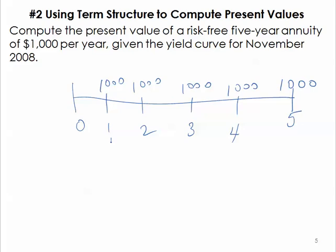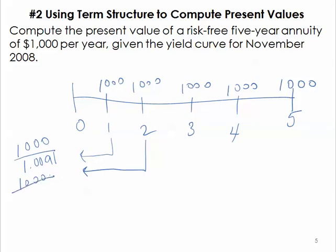So we'll discount the one thousand dollars back at the one year bond rate which was 0.091 percent, and then the year two cash flow will be discounted back at the two year rate which is 1.0098 percent, and you remember to square that, and so on for three.